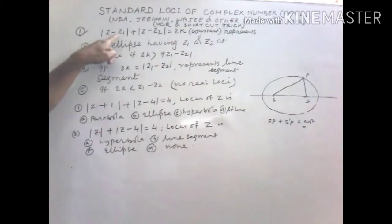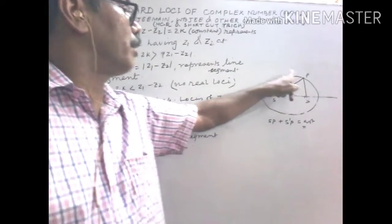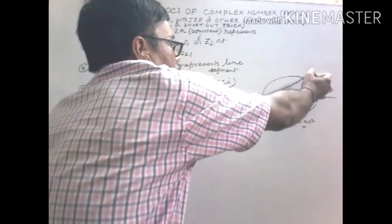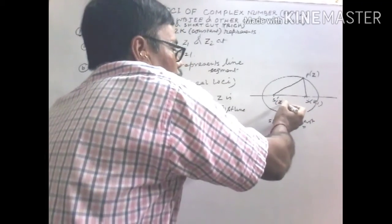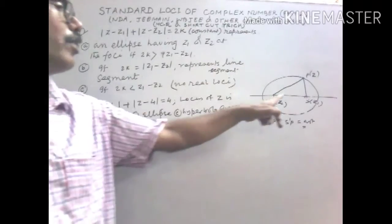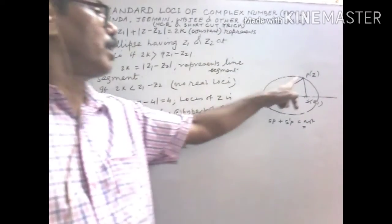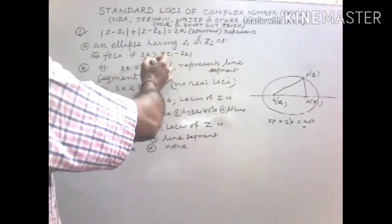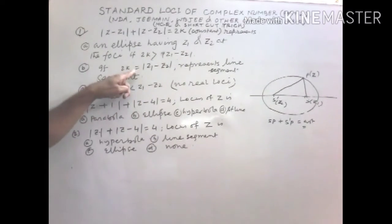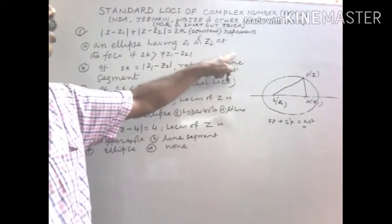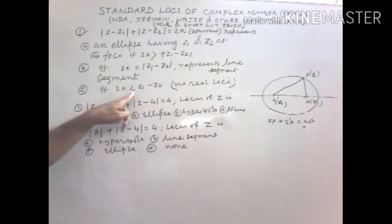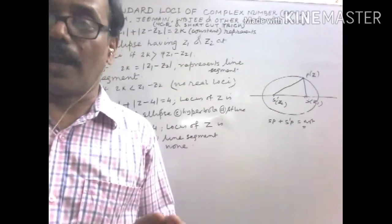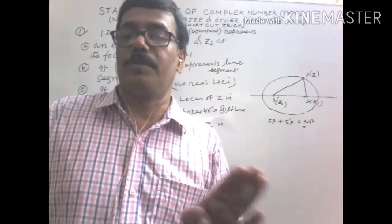Here Z is the variable point. Z1 is at one focus, so |Z - Z1| is SP, and |Z - Z2| is S'P. If their sum equals a constant, it represents an ellipse when 2k > |Z1 - Z2|. If 2k equals |Z1 - Z2|, it represents a line segment. If 2k is less than |Z1 - Z2|, there is no real locus.